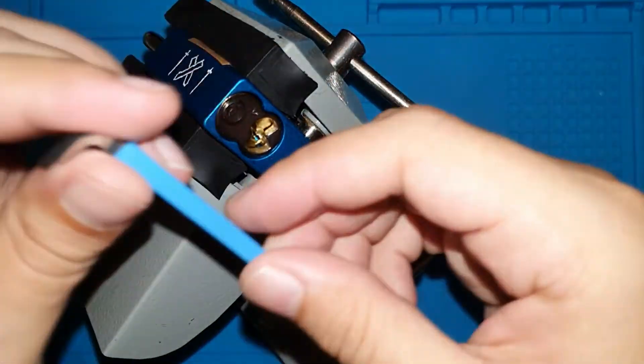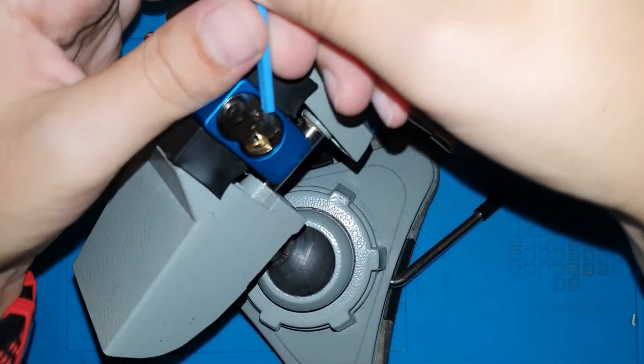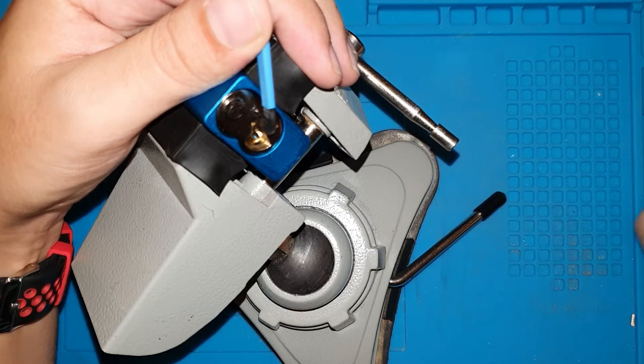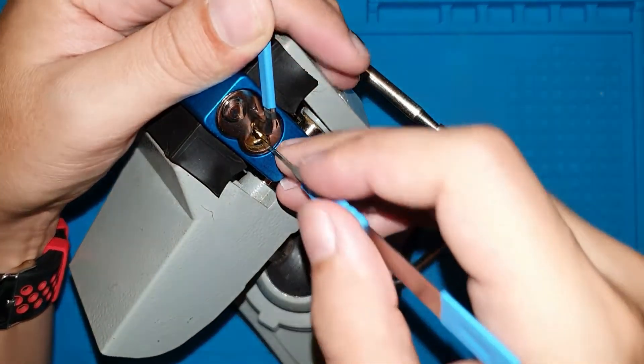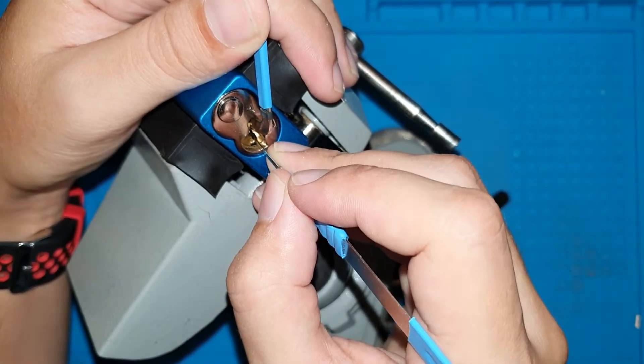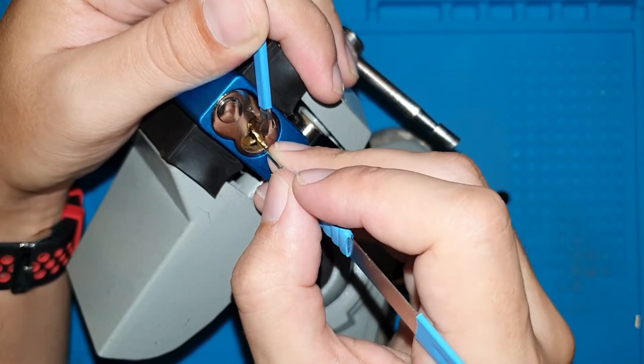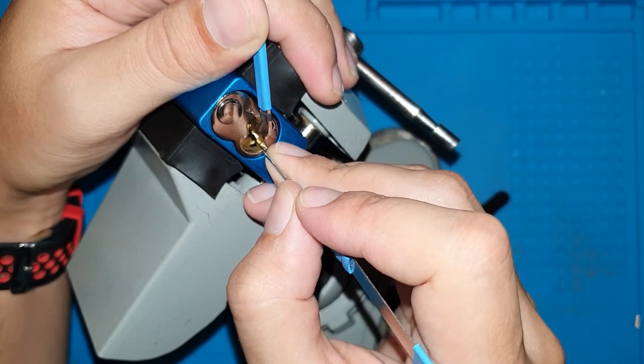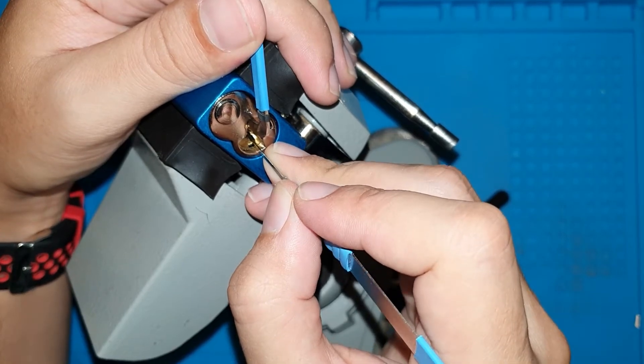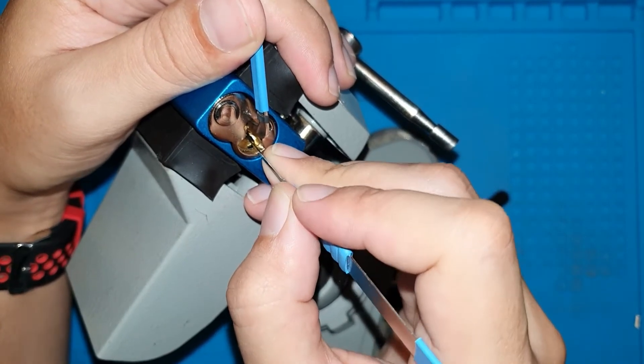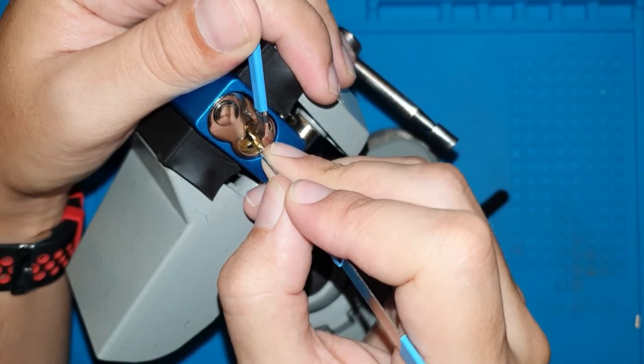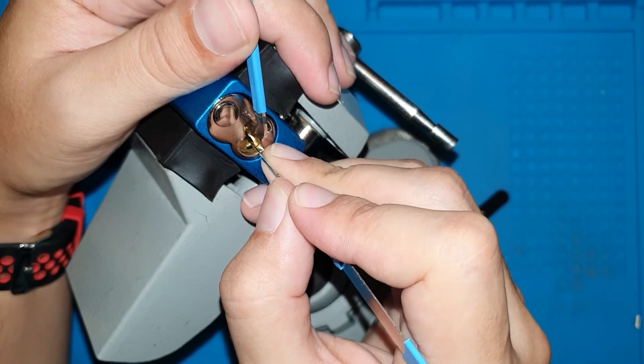So here we go. Now this challenge lock is based on an American lock, and so I have to be very careful to keep testing if the lock is open because it tends to do that, to be open and we don't notice because we don't push hard enough on the tension wrench.